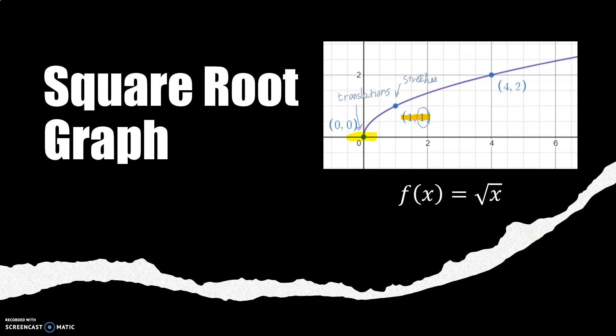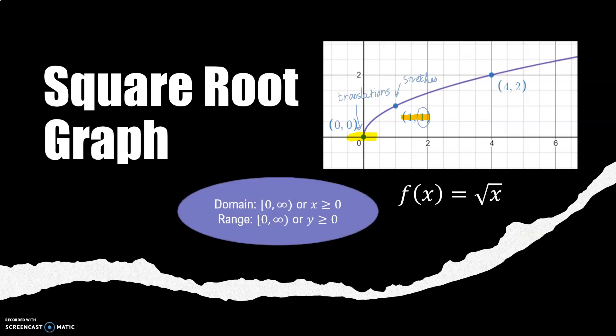And the square root graph has a domain - if I go from left to right it starts at zero and it goes out to the right forever, so it goes to infinity. There is a bracket on zero because there's actually a point there. The range is also from zero to infinity, but remember those are y coordinates. So the lowest point is at zero. This graph continues to increase until infinity.